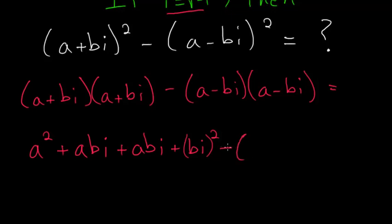And then we have minus, and I'll put all of this in parentheses since we have a minus on the outside. So again we'll have a times a, so a squared, and then a times minus bi, so minus abi, and then minus bi times a, so that's the same thing, minus abi. And then at the end we have minus bi times minus bi, which is a positive number, so I'll write plus bi squared.